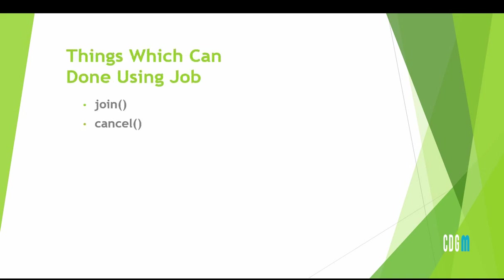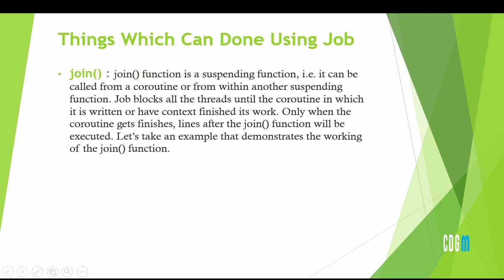Now, things we can do with a job: we can join it and we can also cancel it. The join function is a suspending function — it can be called from a coroutine or from within another suspending function. Join blocks all threads until the coroutine in it completes. Simply put, it lets us start some function at a specific point, and if we want to run a line of code at a specific place, we use join for it.